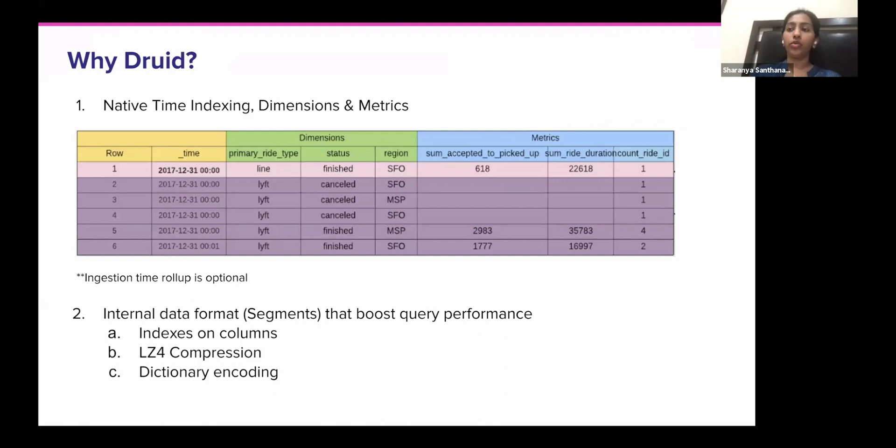So why we chose to go with Druid in our tech stack. I'll quickly walk you through the feature set of Druid which made us go ahead with it. Firstly, it has native support for time indexing. So basically every row has a timestamp column and the timestamp column is indexed on. So it's very performant to look up queries based on time filters and intervals.